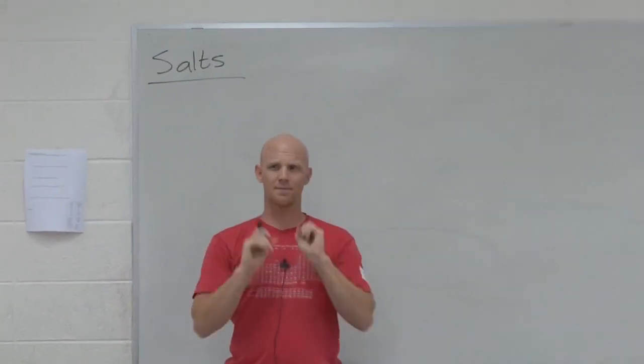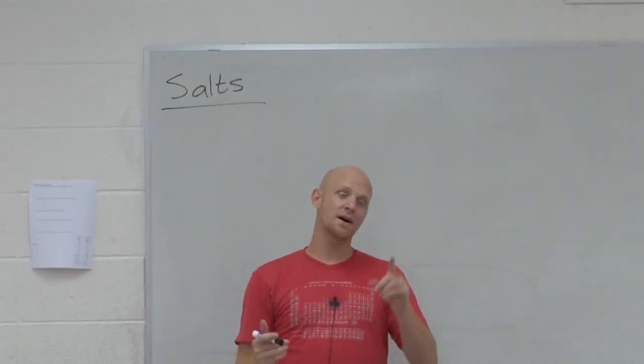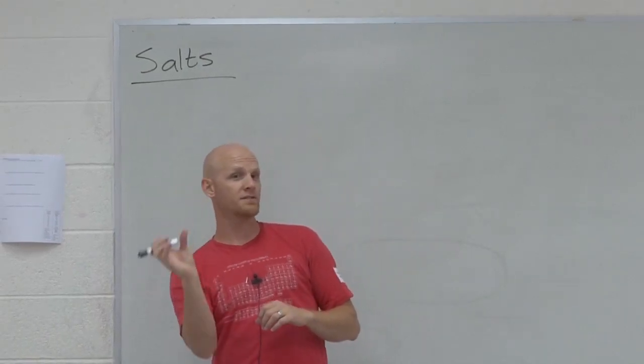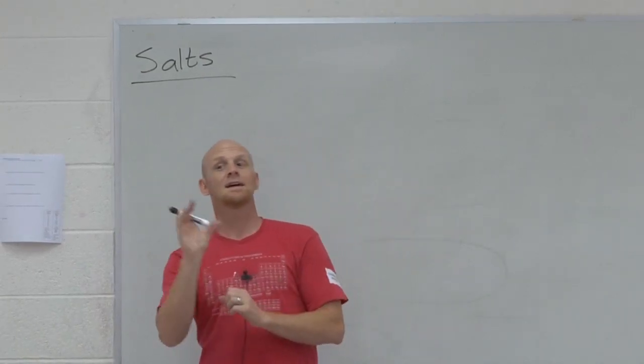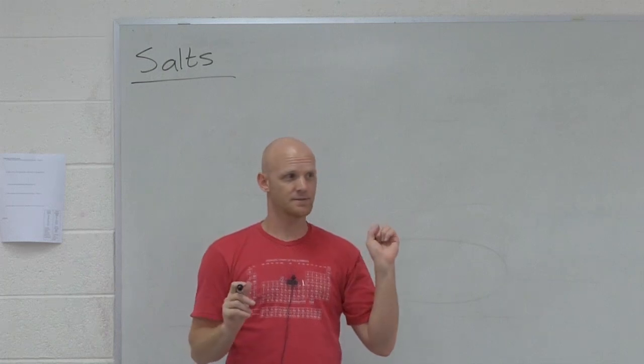What are the two parts to ionic compounds? Usually metal and non-metal, but not always. Always positive ion, negative ion, or cation and anion.